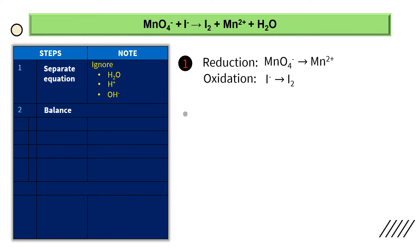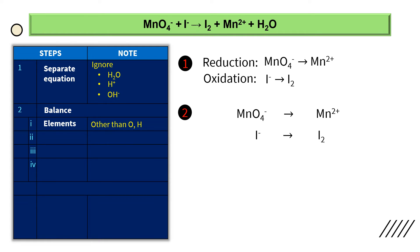Step 2: balance. We copy back the first half equation and the second half equation. There are 4 things that we need to balance. The first is to balance elements other than oxygen and hydrogen. For the first half equation, the element other than oxygen and hydrogen is manganese — one manganese on the left and one on the right, so manganese is balanced. For the second half equation, the element is iodine — one iodine on the left but two on the right, so iodine is not balanced.